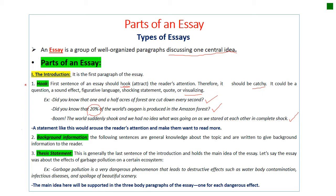A statement like this would arouse the reader's attention and make them want to read more. The second part of your introduction, after the hook, is the background information — general information about your topic, not the specifics. The following sentences are general knowledge about the topic and are written to give background information to the reader. Finally, the thesis statement should be, as far as you're concerned as essay writers, the last sentence. Maybe in some articles it won't be the last sentence, or it's implicit and not even stated. But as a 12th grader going for the official exams, you should include your thesis statement in the last sentence of your introduction.